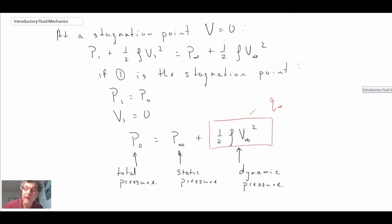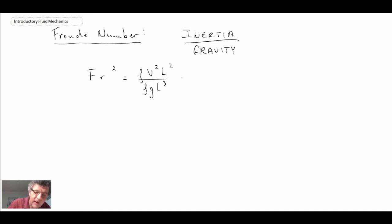Other non-dimensional numbers that we have, we have non-dimensional numbers that are related to wave activity, and the Froude number is the one that we use. This is a ratio of inertia to gravity. If we write the Froude number squared and we look at the ratio of these terms, we get something like this, which then collapses down to something like this.